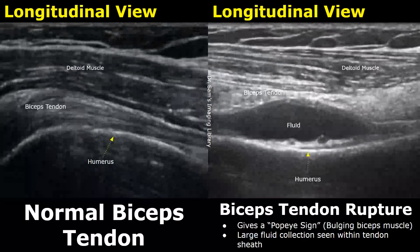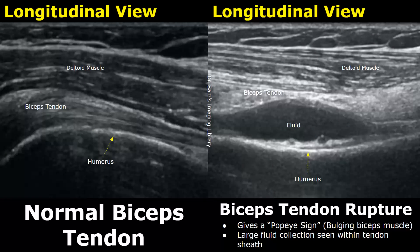A biceps tendon rupture can give a Popeye sign, which means there will be a bulging biceps muscle. There will be a large swelling of the biceps muscle, usually occurring due to a large fluid collection within the tendon sheath.